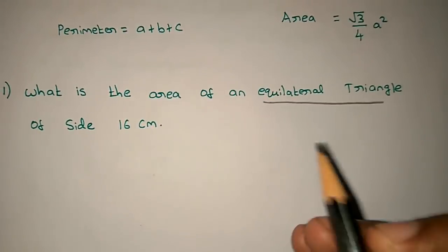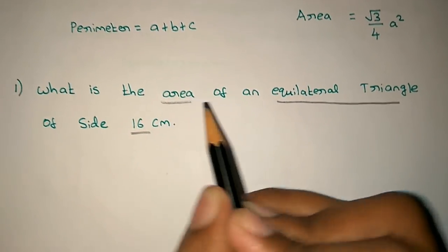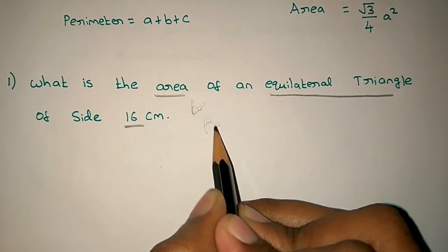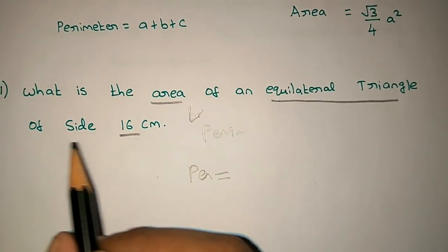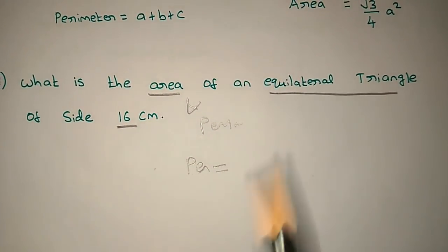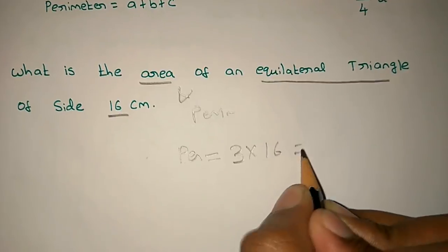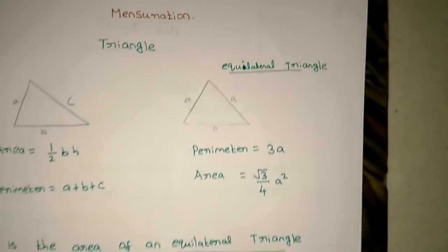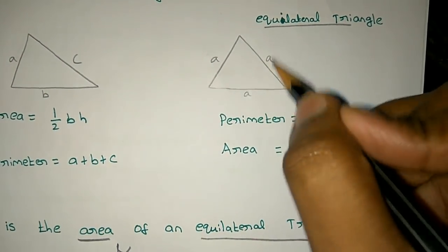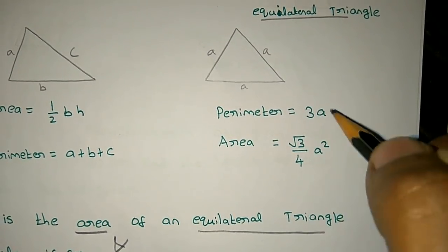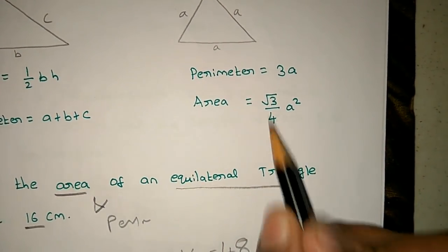For the equilateral triangle with side 16m, let's solve the perimeter first. The perimeter equals 3 times the side. So 3 × 16 = 48m. Since it is an equal triangle, all three sides are 16m each, giving a perimeter of 48m.